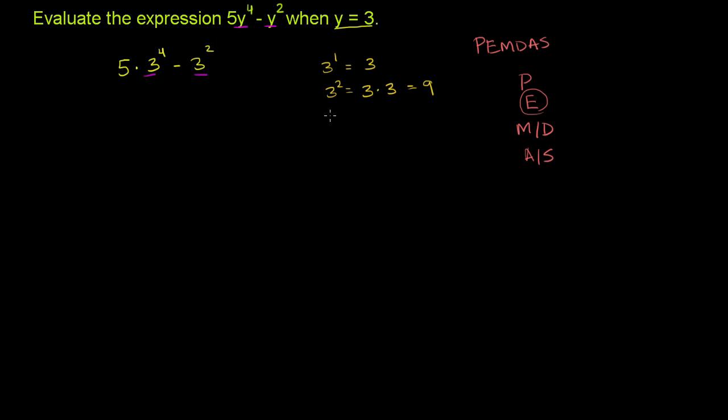3 to the third power is equal to 3 times 3 times 3. Or you could view it as 3 squared times 3. So it'll be 3 times 3 is 9, 9 times 3 is equal to 27.